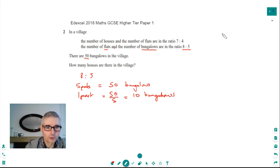Okay, so if we know what one part is worth, we can actually work out very easily what 8 parts is worth and that is the number of flats. So the flats equals 8 parts. And since one part was equal to 10, 8 parts is equal to 8 times 10. So that's equal to 80. So in our village, we've got 80 flats.